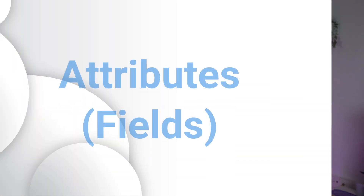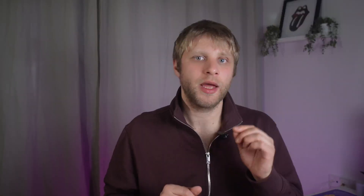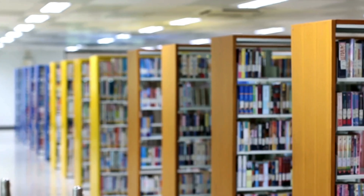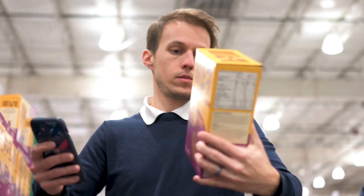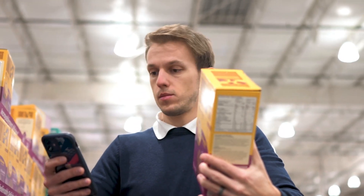Next come attributes, also known as fields. Each building has different features that define it. A library might have attributes like the number of books, types of books, and hours of operation. Similarly, a grocery store has attributes like types of products sold, prices, categories, and brands. Attributes are the individual pieces of information that describe each aspect of an entity. In a column-oriented database, like inside a data warehouse, these are the columns of a table.